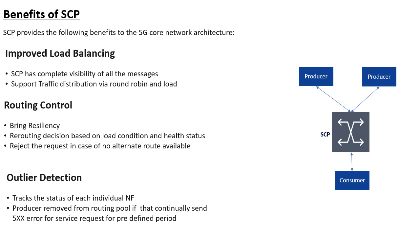Outlier detection means that if one of the producers is sending some cause codes or 5xx errors — for example, 500 Internal Server Error — the producer is not healthy because it cannot process requests. SCP has the capability to reroute traffic to another producer. It keeps checking the rejection cause codes given by the producer and, based on that, can reroute the traffic to another producer.